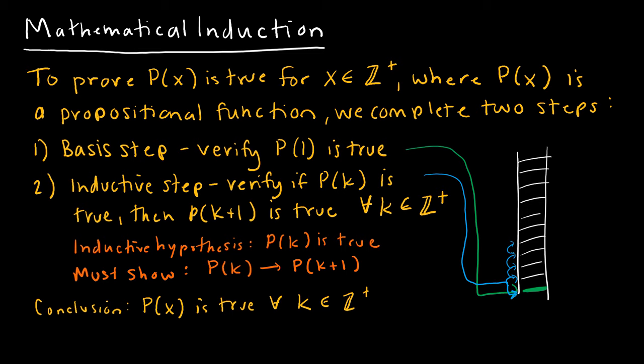So what does that mean in terms of what we're going to do mathematically? Well, we're first going to prove a basis step. The basis step says I can get to the first rung of my ladder — I can verify that my propositional function p of x is true for whatever my first value is. That first value might be 3, for example, so p of 3 would be your basis step.